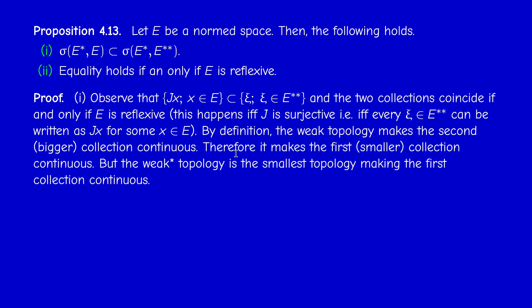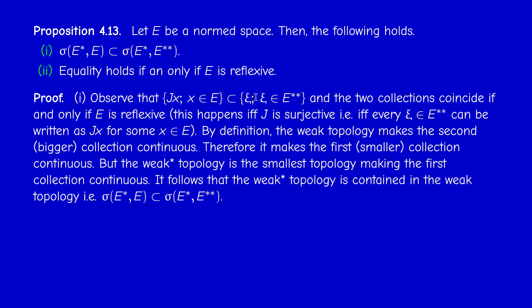The weak-star topology is the smallest topology making this collection continuous, and therefore it is contained in the weak topology. It's trivial, but perhaps a little hard to understand at first.